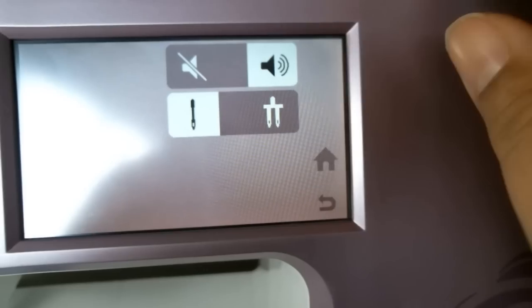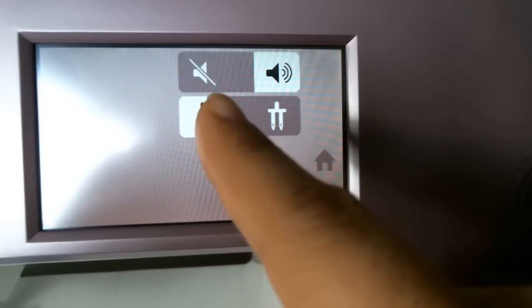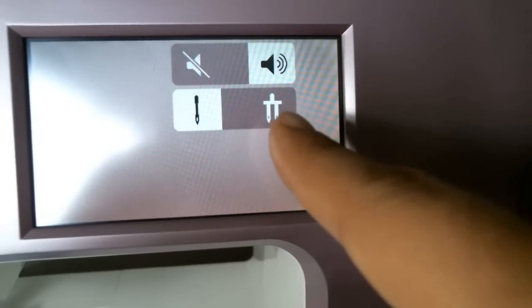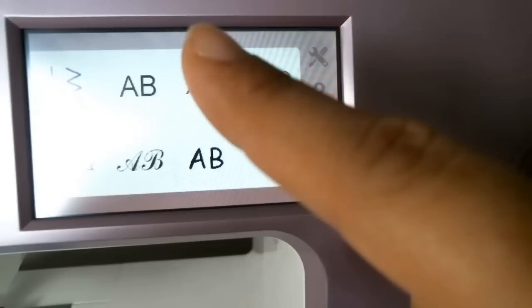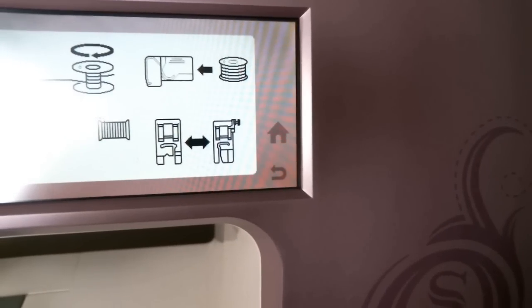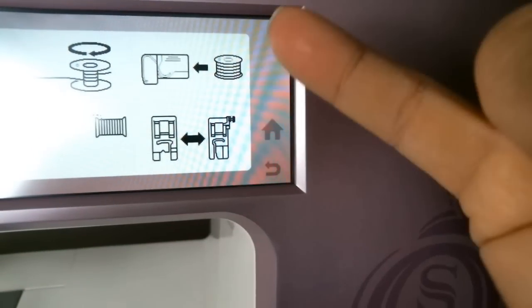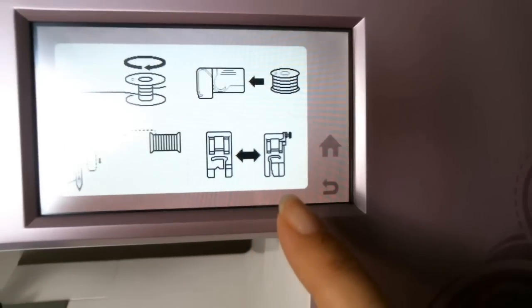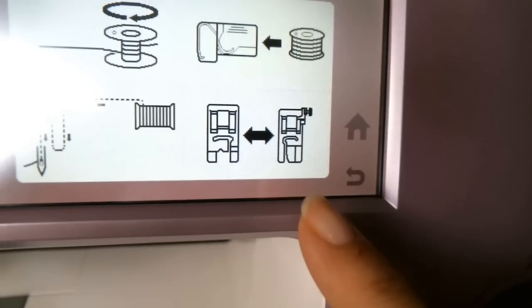So if we hit the setting button, all it really does is it allows you to turn the audible off or on, and then it allows you to switch from one needle to two needles. And then if you hit home or back, it'll take you back to the home screen. And then if you hit the question button, as you can see here, basically this helps you with threading. It helps you with threading and helps you to wind the bobbin and helps you to thread the bobbin. And it helps you with changing the presser feet.